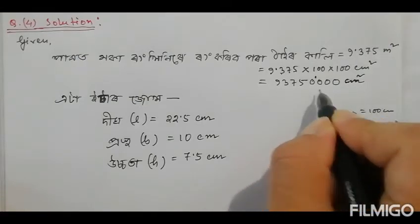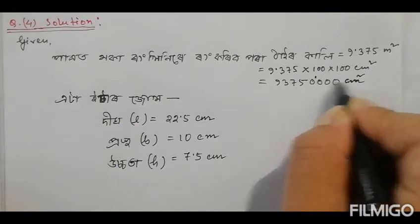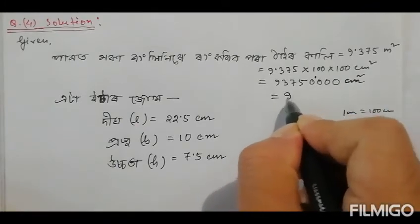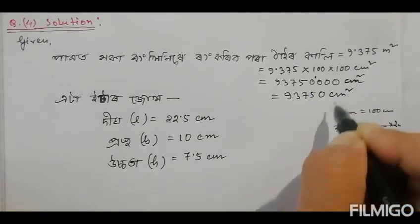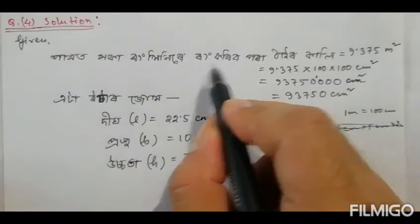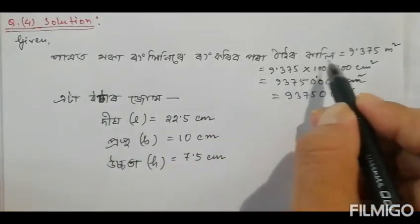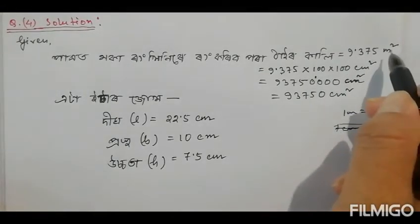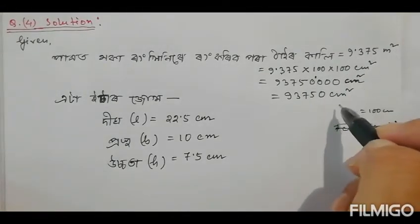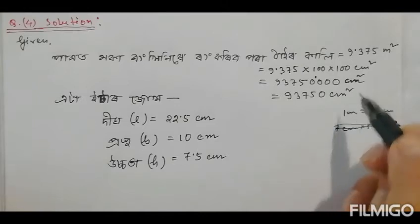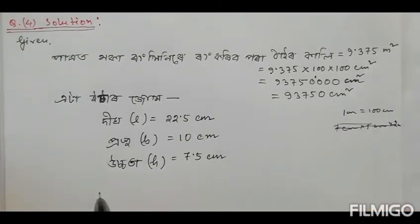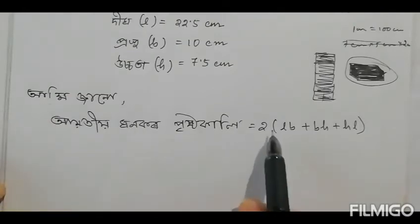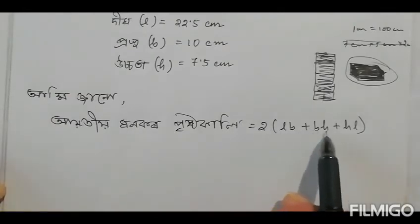So the result is 93750 cm², and in m² as well. Now I know that I have to use the formula 2 into (lb + bh + hl) to find the total surface area.